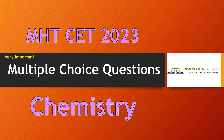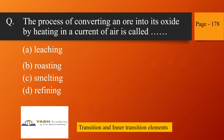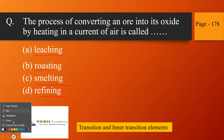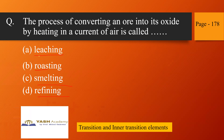This is the first question. The process of converting an ore into its oxide by heating in a current of air is called — four options are given: leaching, roasting, smelting, and refining. This question is from inner transition elements, page 178. The correct answer is option B, that is roasting.